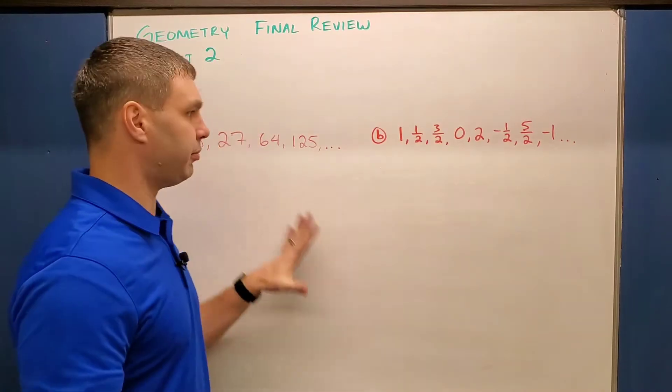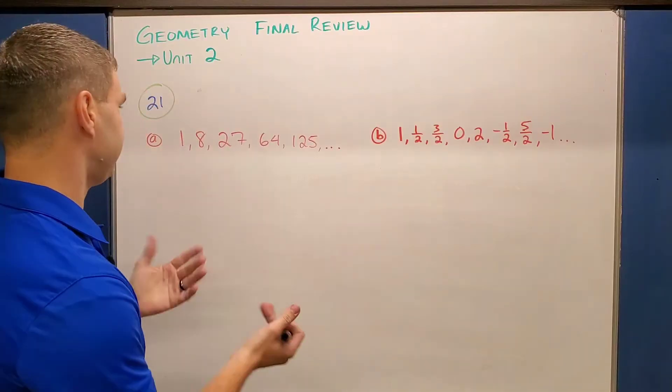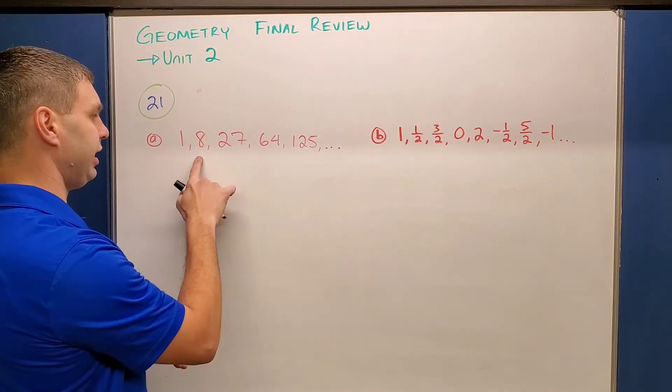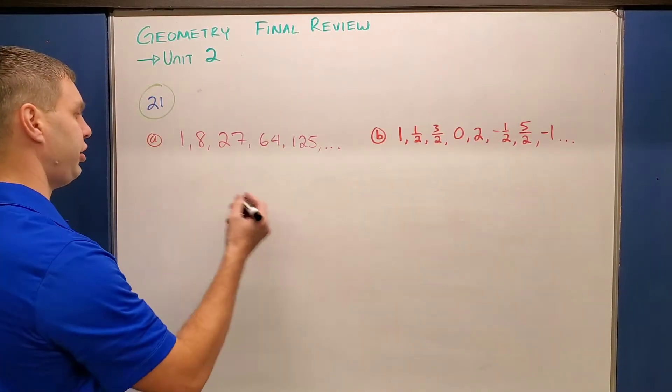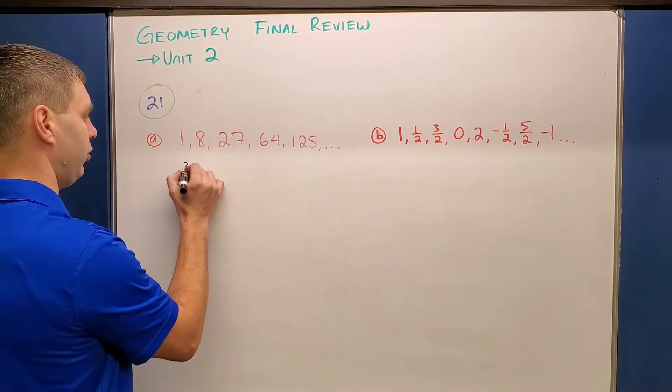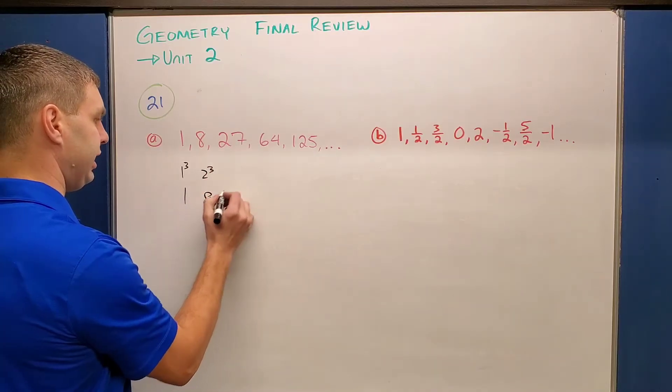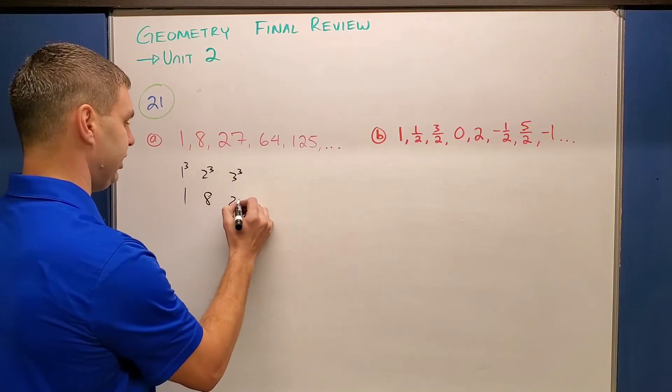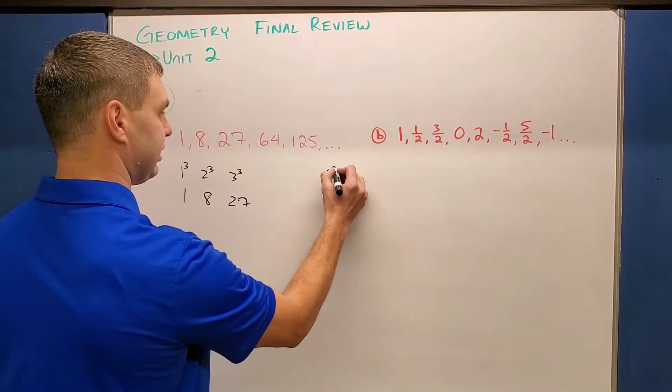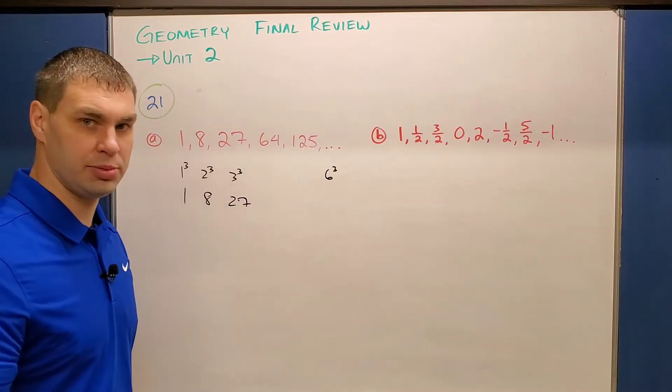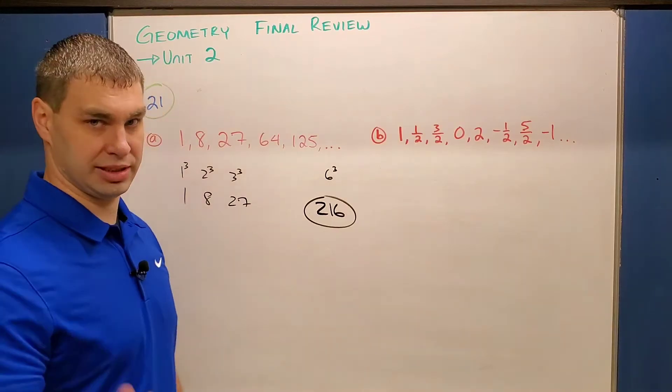The second part of this video is just some patterns. These again are both in the review packet I gave my students. This is 1, 8, 27, 64, 125. If you have a keen eye, you know right away that these are actually cube numbers. So for example, 1 cubed is 1, 2 cubed is 8, 3 cubed is 27, and so on. So this would be 4 cubed, 5 cubed, which means I need 6 cubed, which if you know your cubes, that'd be 216. So 216 would be the next thing that comes in this pattern.